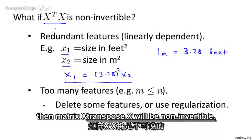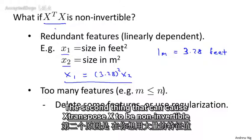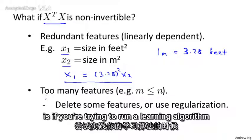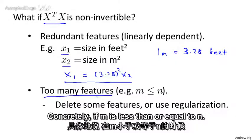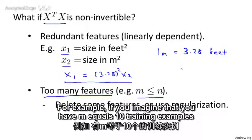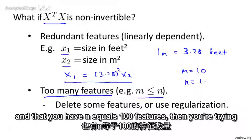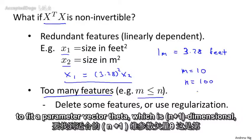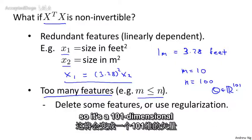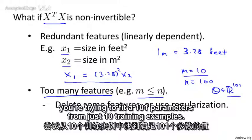then the matrix X transpose X will be non-invertible. The second thing that can cause X transpose X to be non-invertible is if you're trying to run a learning algorithm with a lot of features. Concretely, if m is less than or equal to n. For example, if you imagine that you have m equals 10 training examples, but you have n equals 100 features, then you're trying to fit a parameter vector theta, which is n plus one dimensional. So it's 101 dimensional. You're trying to fit 101 parameters from just 10 training examples.